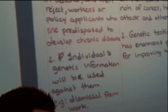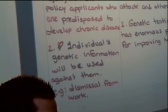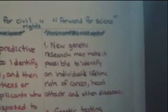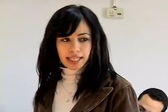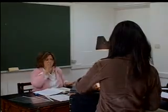The other step is individuals' genetic information will be used against them — for example, dismissal from work. Steps forward for science first: new genetic research may make it possible to identify an individual's lifetime risk of cancer, heart attack, and other diseases. Therefore, can you elaborate on this? Why is this a good thing? Why is this a step forward? In terms of this disease or in the workers. The other step is genetic testing — it has enormous potential for improving healthcare. Very good. So they're really related? Yes. This is what it means. Thank you very much.